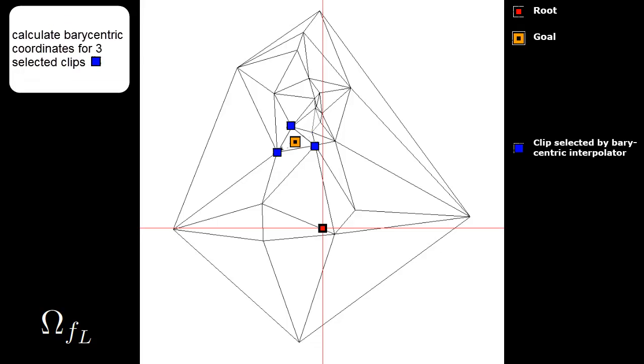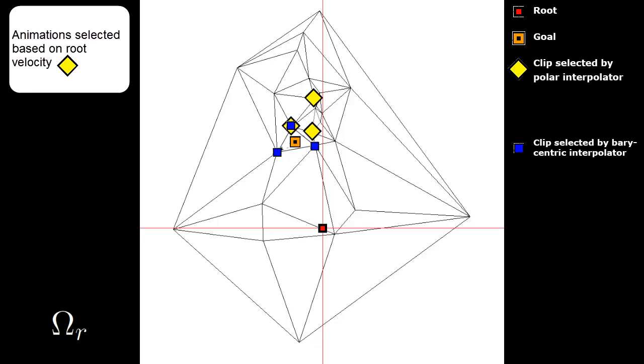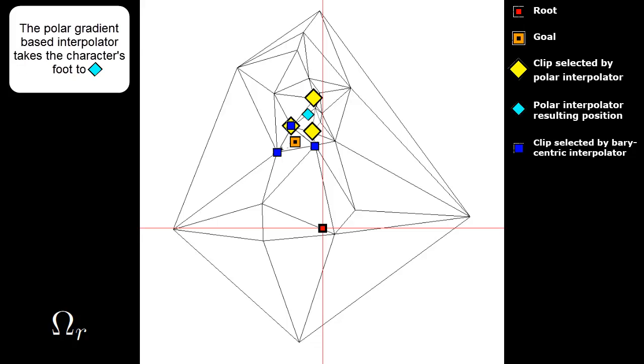This interpolation only considers foot position, so if we want to incorporate root velocity, we need to include the results of the polar band interpolator. We now have a new set of animations selected based on root velocity and the resulting foot landing from the interpolation between them.